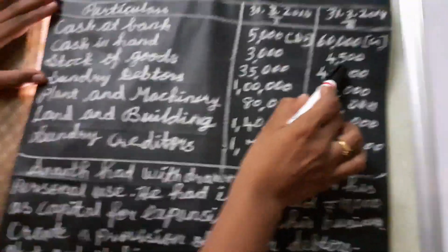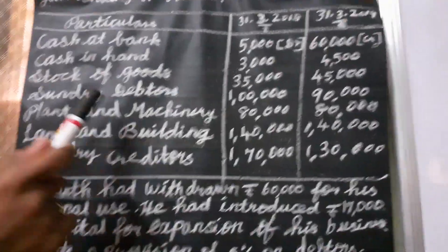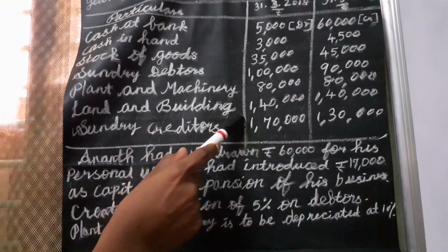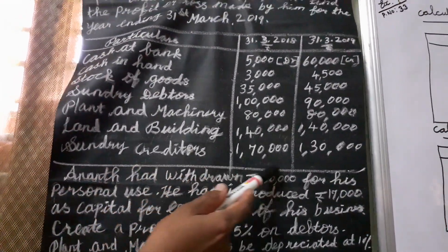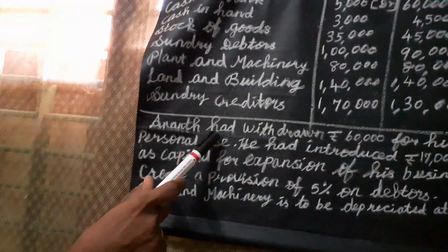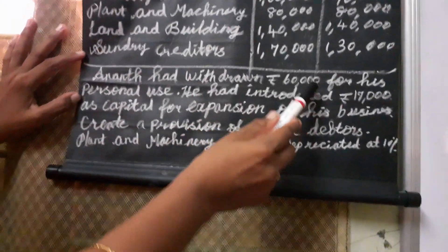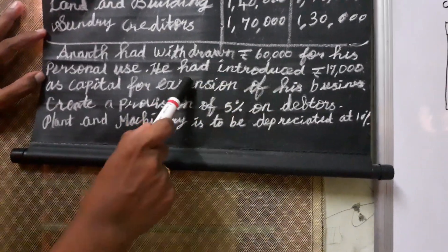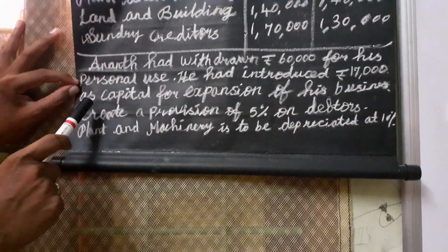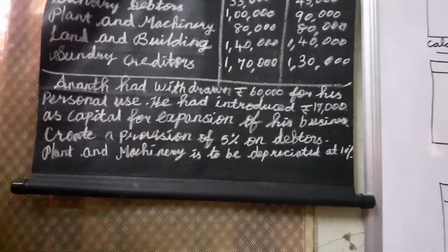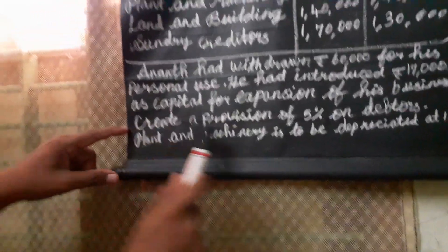Next, cash in hand 3,000 and 4,500. Stock of goods 35,000 and 45,000. Sundry debtors 1,90,000. Plant and machinery 80,000 and 80,000. Land and building 1,40,000 and 1,40,000. Sundry creditors 1,70,000 and 1,30,000. Anand had withdrawn 60,000 as a lump sum amount for personal use. And he introduced 17,000 as additional capital for the expansion of his business. So we want to note one more adjustment given in this sum.